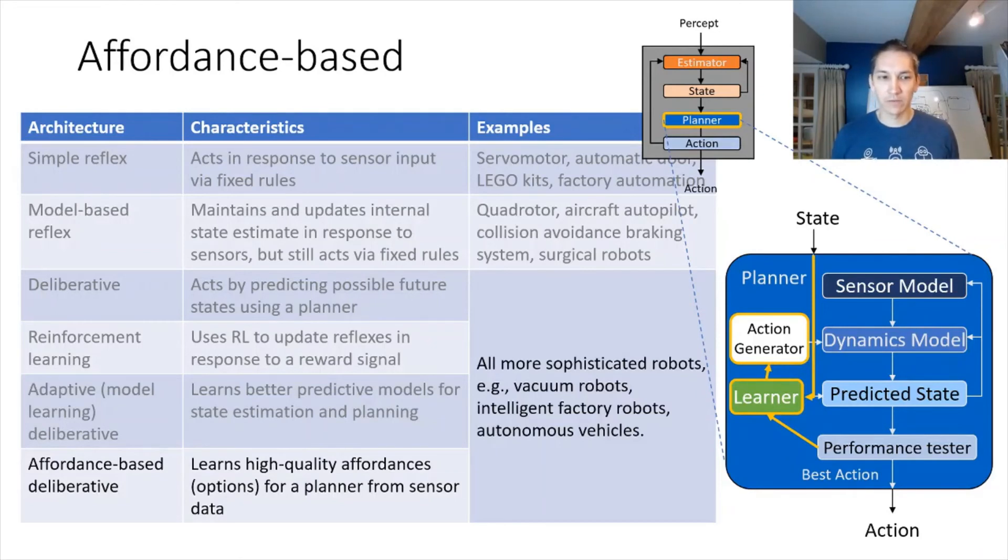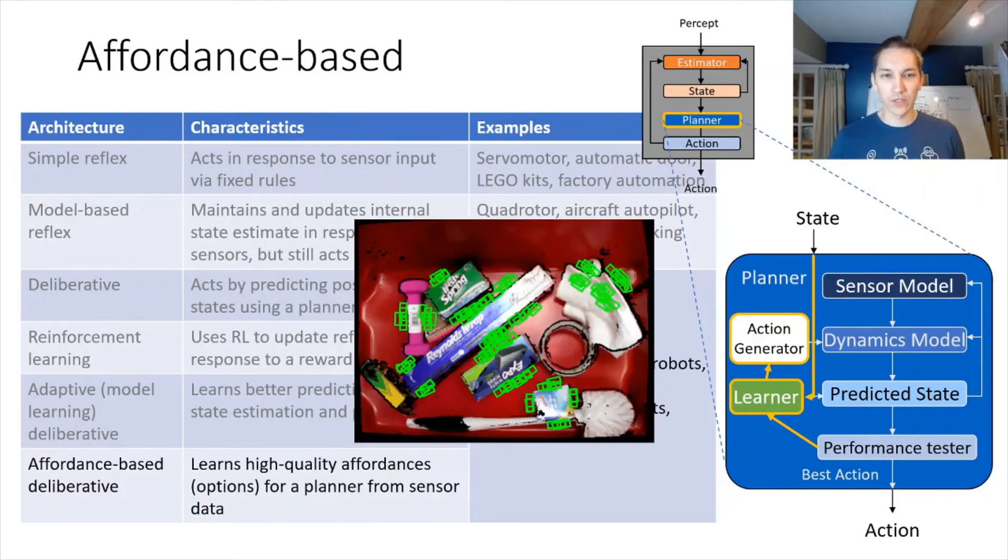Finally, we'll talk about affordance-based deliberative architectures in which the learning happens not at the dynamics model component, but at the action generation component. The notion of an affordance is a thing that we can do in the environment. This comes from the cognitive science literature. And the idea is that we can take things that we've done that have performed well, and we can learn to predict or to generate candidate actions that are high performance. This is kind of a little bit abstract for now, but we'll talk about one specifically in this course, which is image-based grasp prediction. The idea is that we have an image, we're going to predict locations that are good for grasping, and these will be candidates that we can then evaluate using the rest of the planning pipeline.